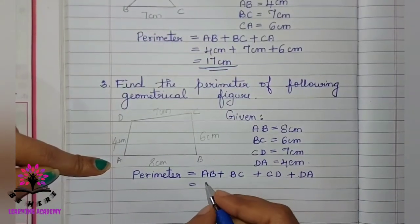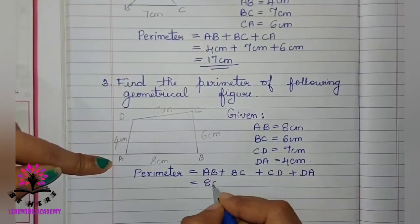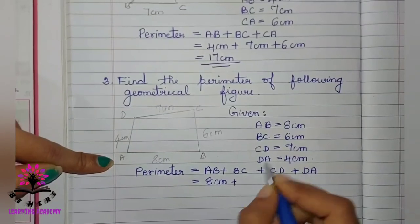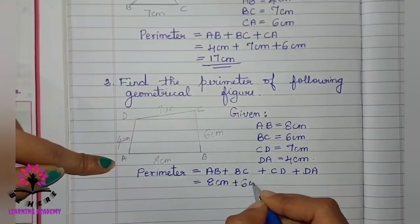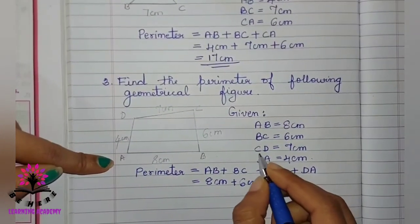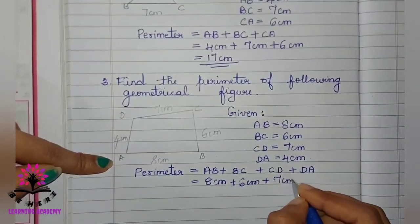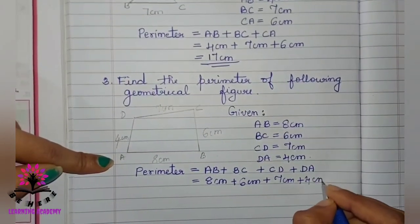Then, write what is AB. AB is 8 cm plus BC, 6 cm. CD, 7 cm. DA, 4 cm.